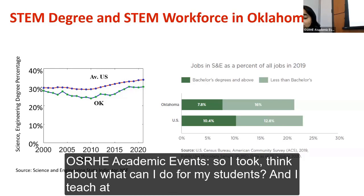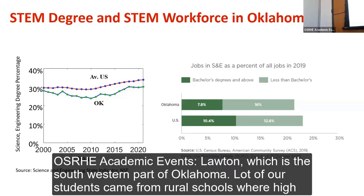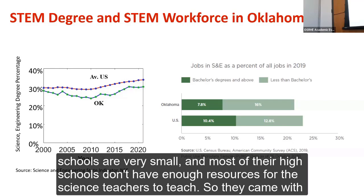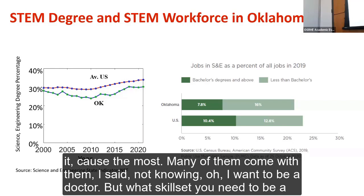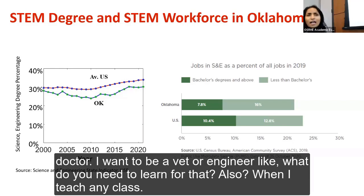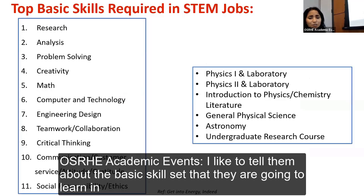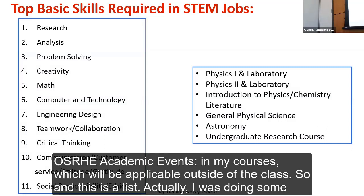I teach in Lawton, in the southwestern part of Oklahoma. A lot of our students come from rural schools where high schools are very small and don't have enough resources for science teachers. Many come with the mindset of wanting to be a doctor or vet or engineer, but not knowing what skill set they need. When I teach any class, I like to tell them about the basic skill sets they will learn that are applicable outside the classroom.